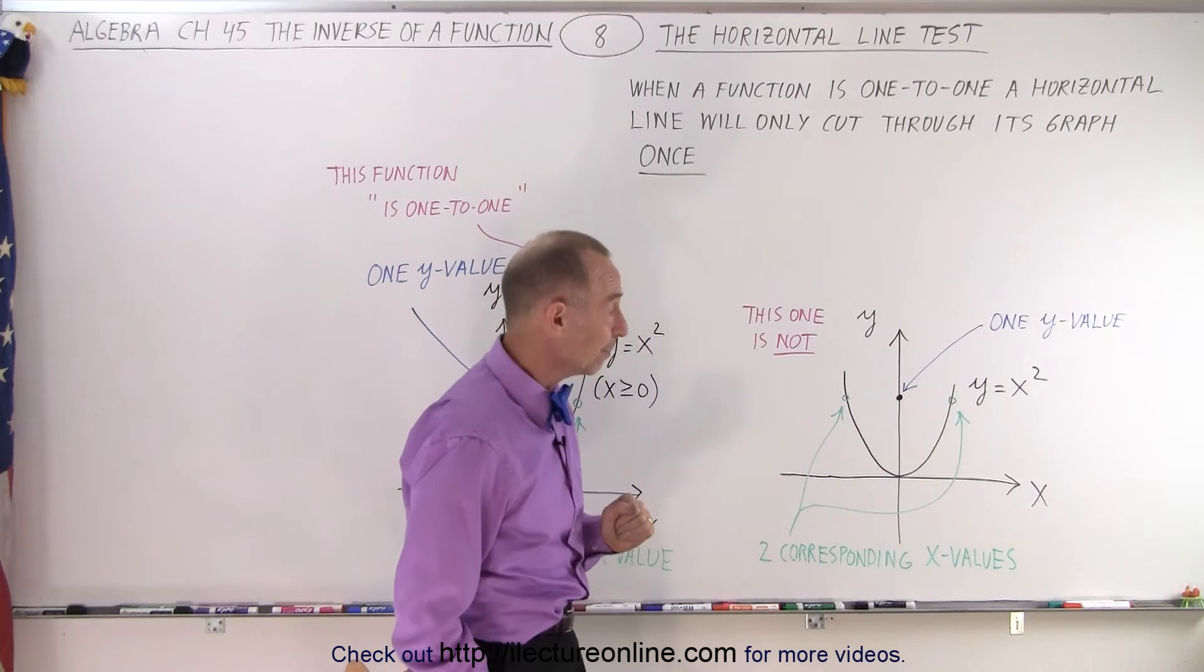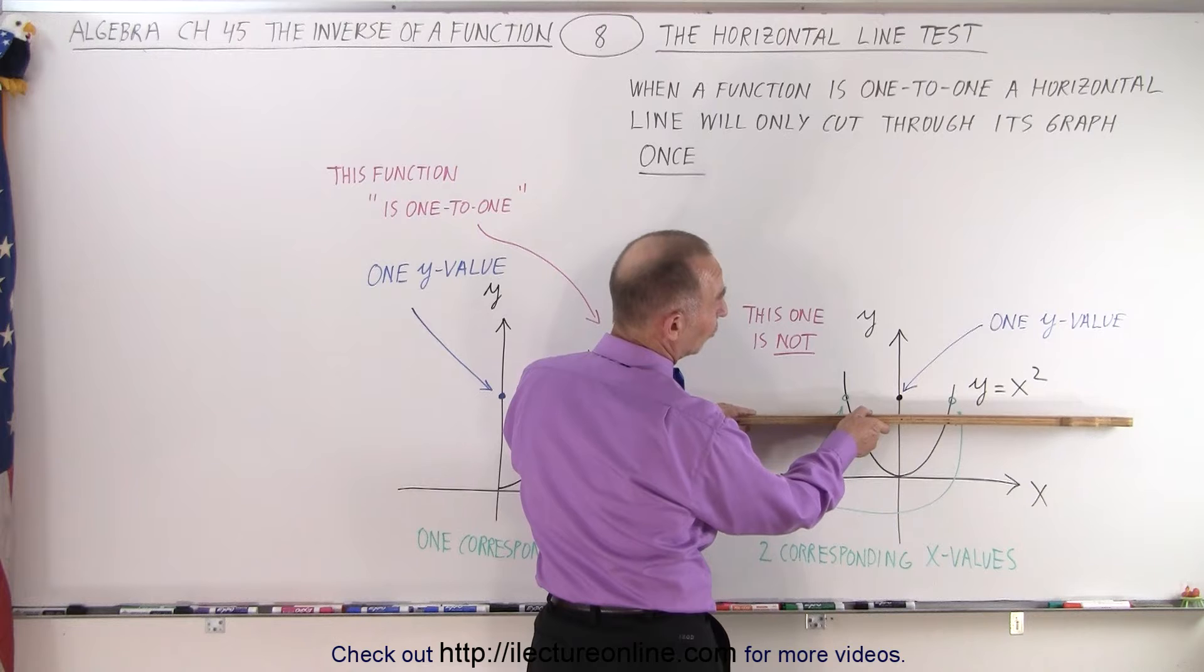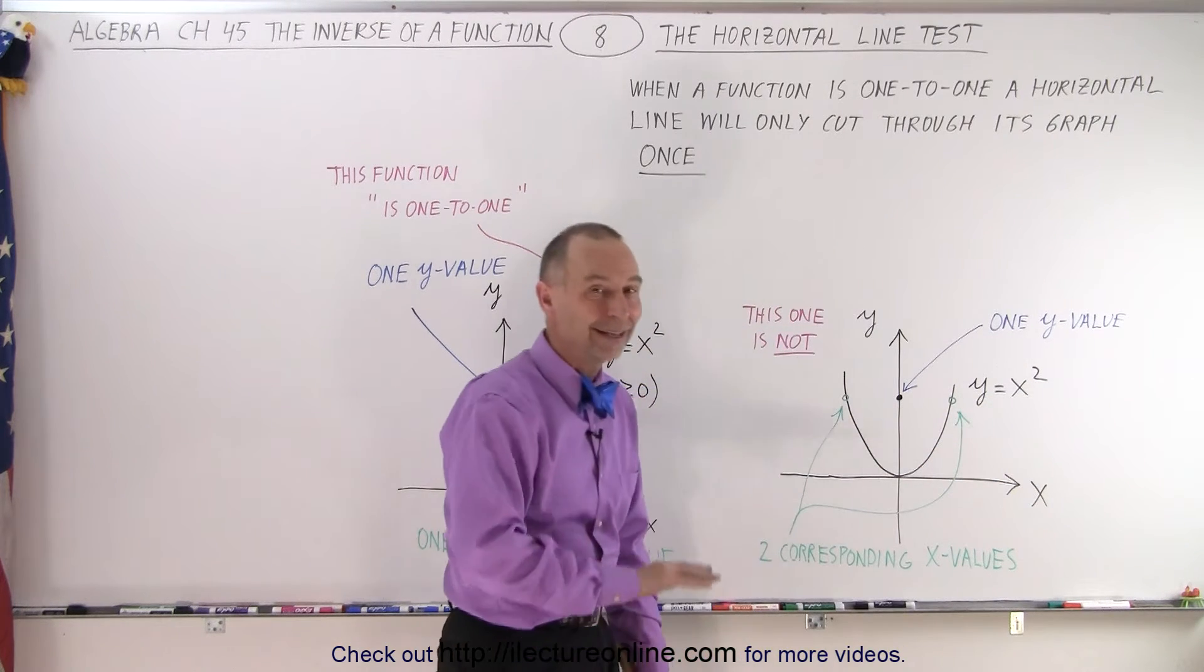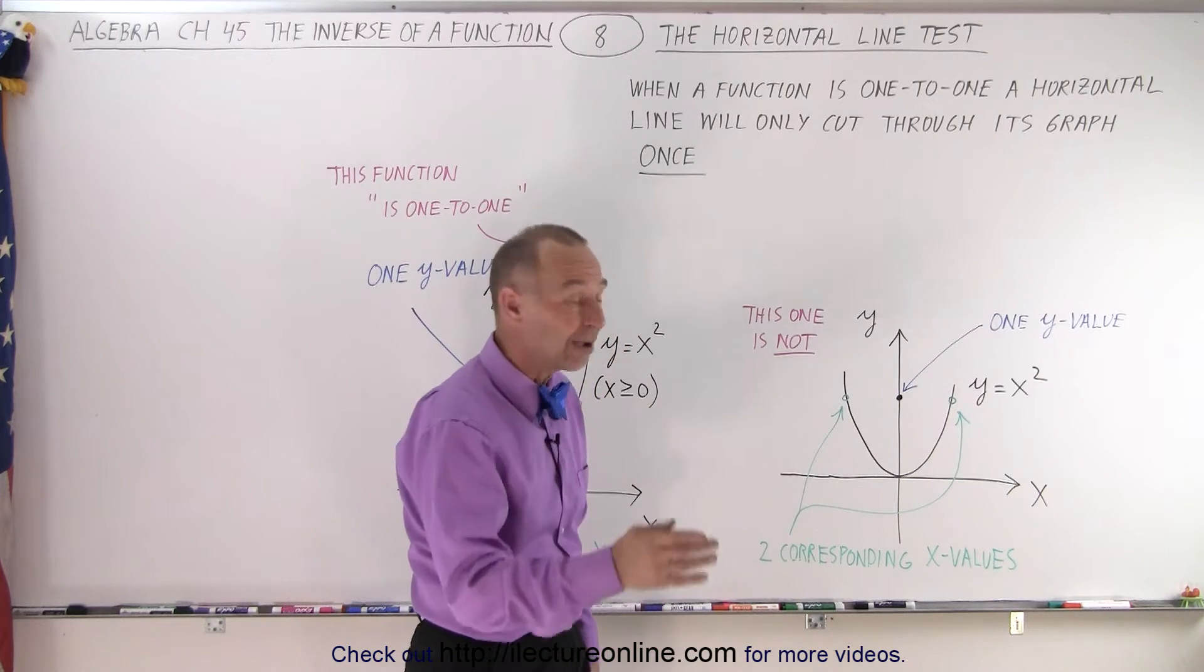There, X can be any value. Now, if I do a horizontal line test here, notice it cuts through the graph of the function twice. Twice means it's not a one-to-one. There's not a one-to-one correspondence between the X and the Y values.